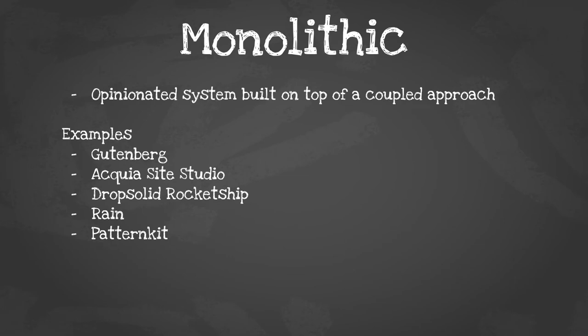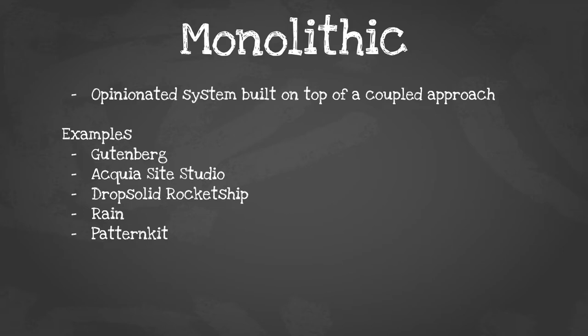Monolithic approaches are typically opinionated systems built on top of a coupled approach — baked into Drupal but with opinions about how to do Drupal. They often have custom code, admin theme adjustments, and patterns already in place to speed you up. The two exceptions are Gutenberg and Acquia Site Studio, which integrate a custom React-based component builder system directly into Drupal. Then you have things like Drop Solid, Rocket Ship, Rain, and Pattern Kit — more Drupal-built systems with opinions about how you're doing Drupal, and leaving those systems can sometimes be difficult.